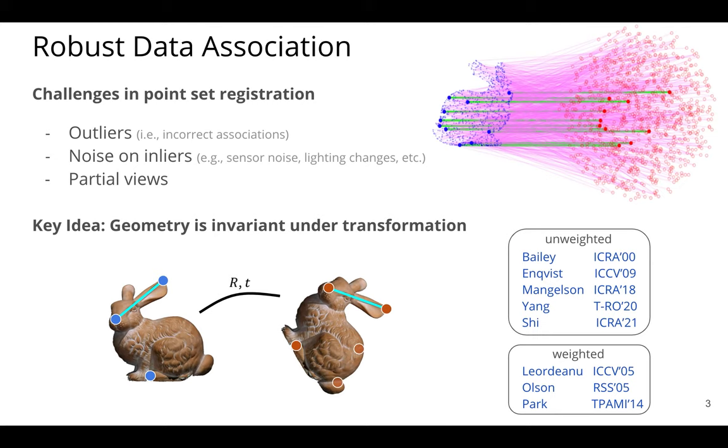So the key idea that we'll leverage is that internal geometry or pairwise geometry between points inside of a single point cloud doesn't change under rigid body transformation. So this idea is relatively simple and has been used in lots of different works. Shown here are a list of the most relevant to this work. I've separated them into unweighted and weighted categories, and I'll talk about that a little bit more in the next few slides.